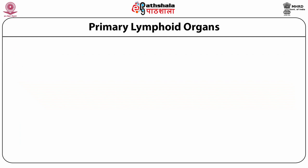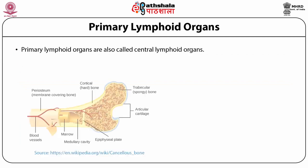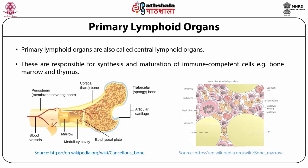Primary lymphoid organs are also called central lymphoid organs. These are responsible for synthesis and maturation of immunocompetent cells, and examples are bone marrow and thymus.